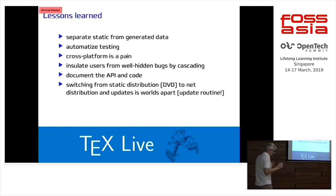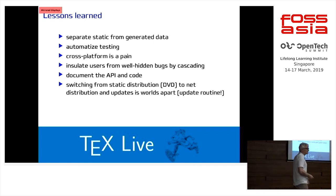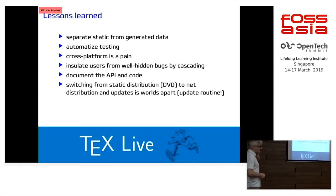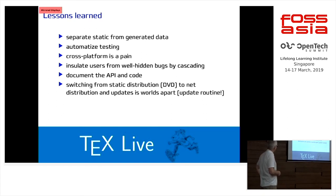Lessons learned: what was very important for us is separating static from generated content, because that helped reduce 3,500 files you'd otherwise have to fix manually down to only 20 or 30 that need attention — that is reasonable. You have to automate all the testing. It's important that you also have machine-readable content. Cross-platform is a pain, especially when you try to support Windows. Cascading — that's what I meant about a separate layer for critical infrastructure — we have the full API documented and try to keep it stable for distributors. Switching from DVD to network distribution was a huge step.